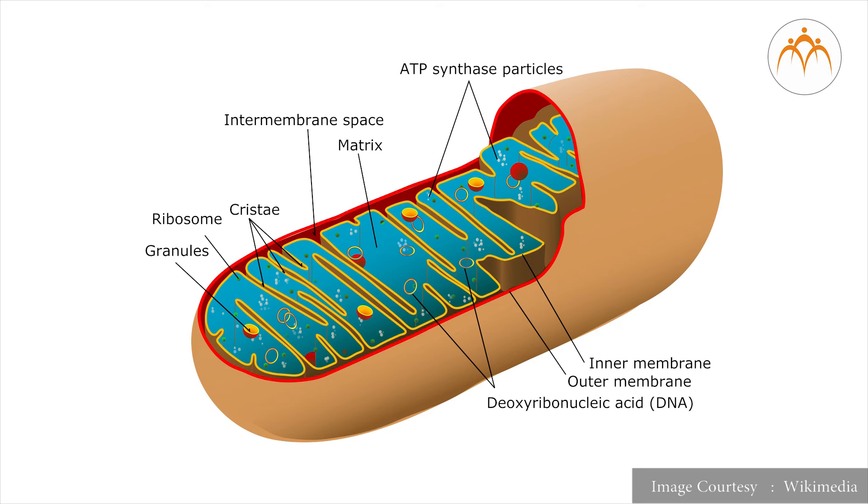Mitochondria have their own circular DNA, RNA molecules, ribosomes, the 70S, and few other molecules that help in protein synthesis.